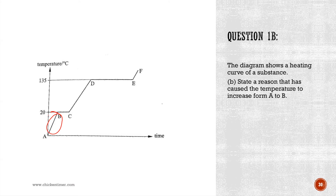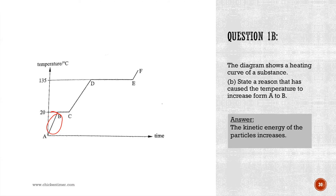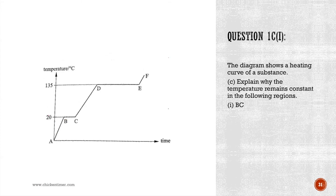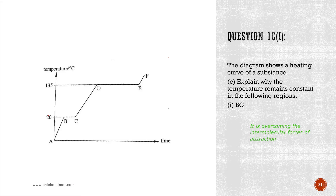For the temperature increase from A to B, energy has been input to raise the kinetic energy of the atoms and molecules, causing molecules to move faster and temperature to increase. For why temperature remains constant in region B-C: the energy goes into overcoming the intermolecular forces of attraction.